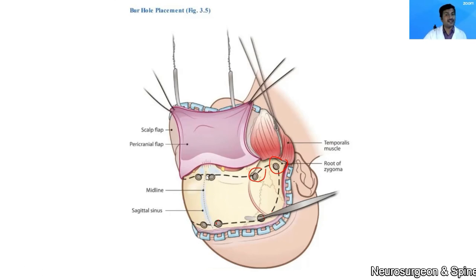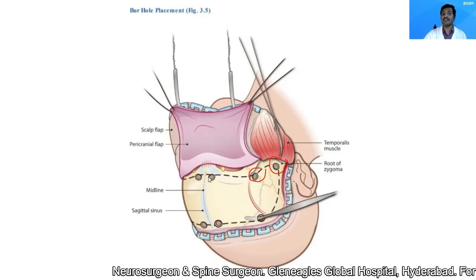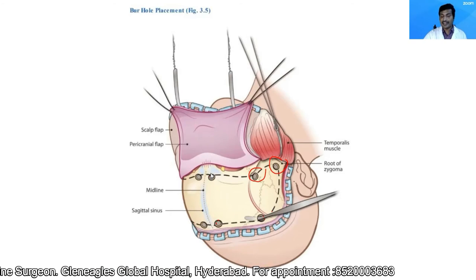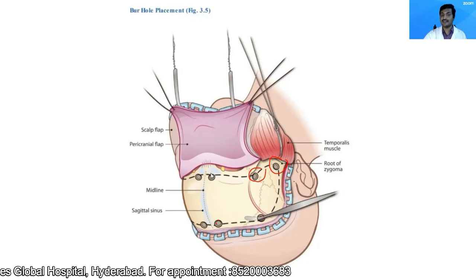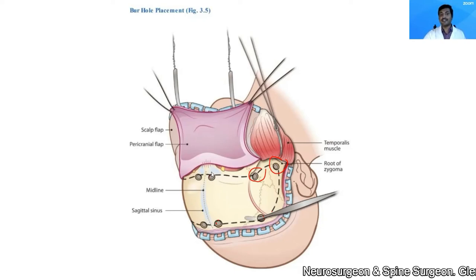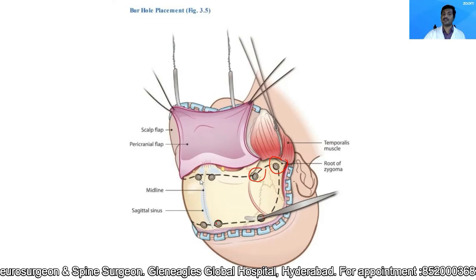These two burr holes may enter into the frontal sinus. If they do, immediately remove the mucosa from the frontal sinuses and pack the frontal sinus with muscle, or fat, and betadine-soaked gauze. All instruments that have entered the frontal sinus should be discarded, and you can start using a new set of instruments.